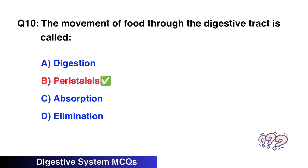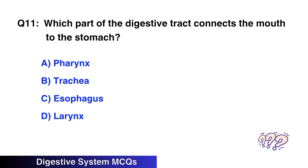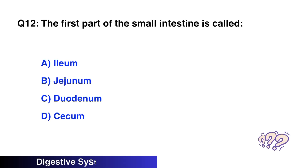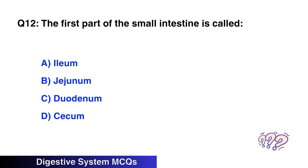Question number ten: The movement of food through the digestive tract is called? The right option is B, peristalsis. Question number eleven: Which part of the digestive tract connects the mouth to the stomach? The right option is C, esophagus. Question number twelve: The first part of the small intestine is called? The right option is C, duodenum.